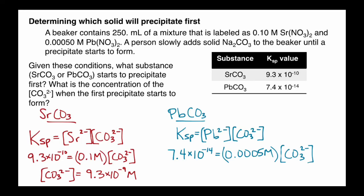Alright, divide both sides by 0.0005. And we get a carbonate concentration of 1.48 times 10 to the negative 10th molar.